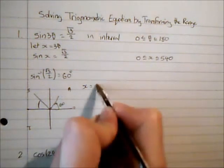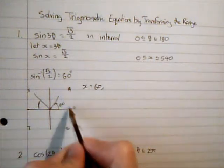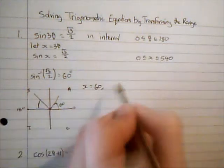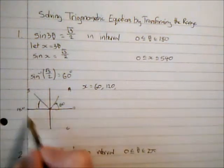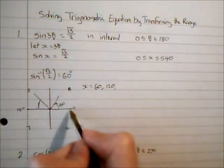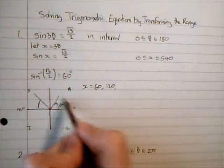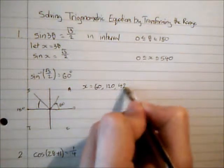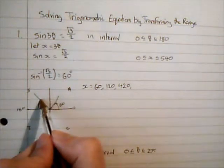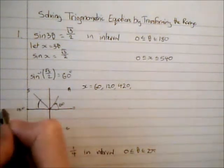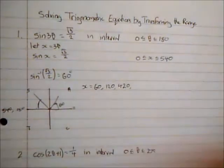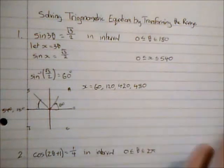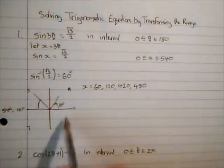I'm looking between 0 and 540, so my solutions for x: my first one is 60, my second solution is over here, 60 before 180, so it's 120. I keep going around, this is 360, one full revolution, so this one is 60 past that, 360 plus 60 is 420. I keep going, another solution here.